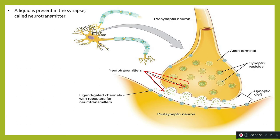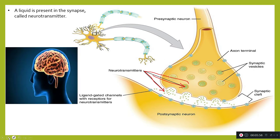In the human brain there are nearly 100 billion neurons, and each neuron is connected to 7,000 to 10,000 other neurons via synapses. In the diagram you can see the axon terminal, the post-synaptic neuron, the synaptic cleft, and the pre-synaptic neuron.